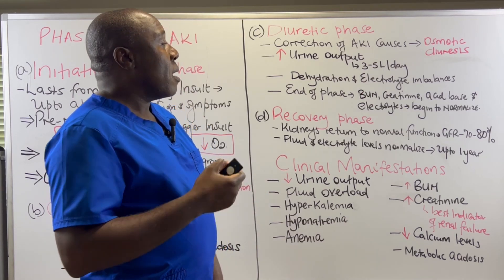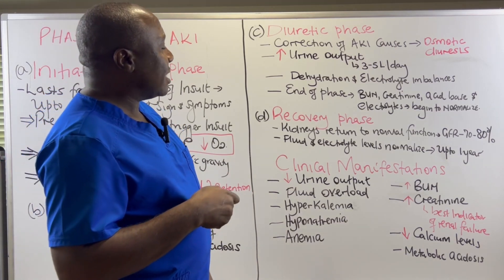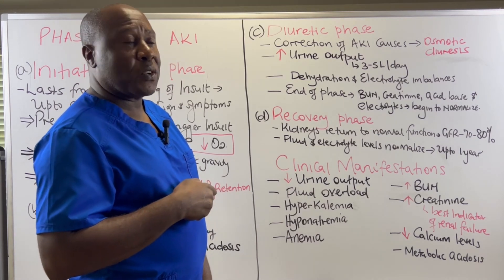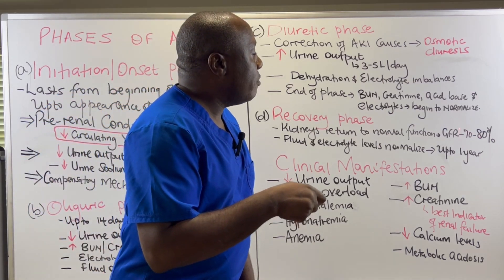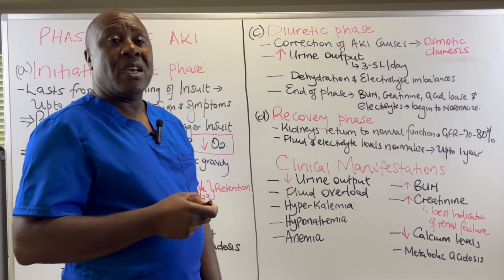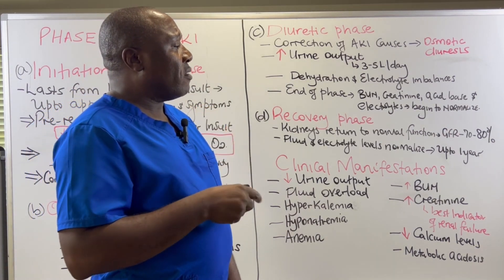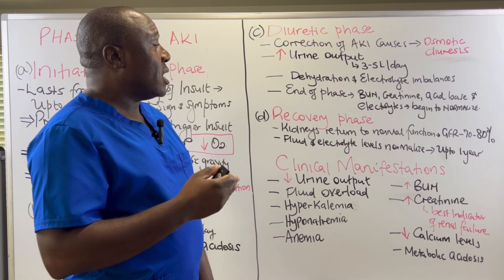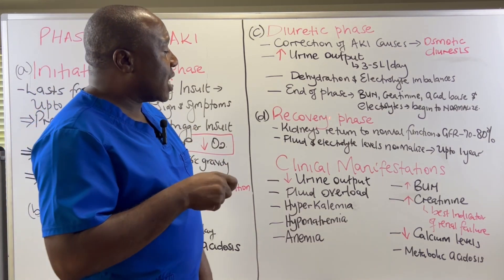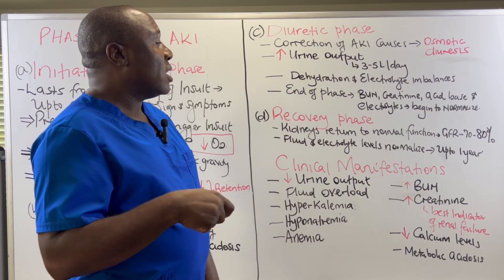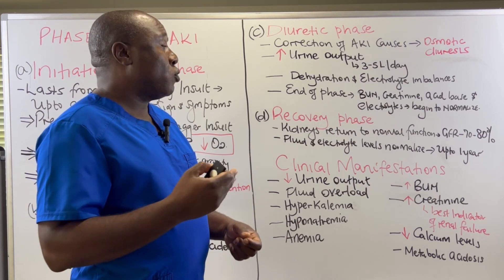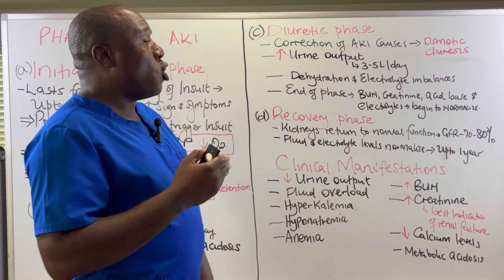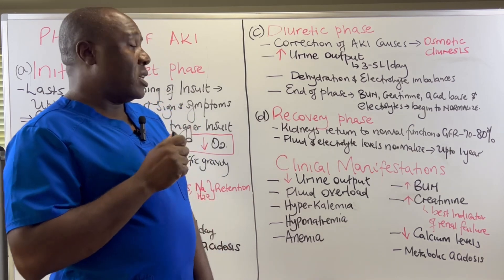Lastly, we have the recovery phase. This is the phase in which the kidneys return to normal function. During this phase, the glomerular filtration rate is between 70 to 80%, which is considered normal kidney function. Fluid and electrolyte levels have normalized, and this recovery could take several months up to one year. The recovery phase is when the kidneys fully recover and return to normal functioning — and that is why we say AKI is reversible.